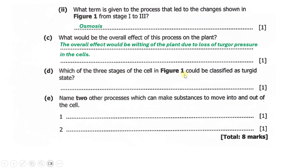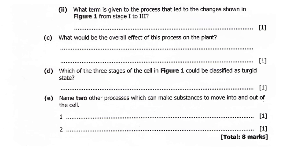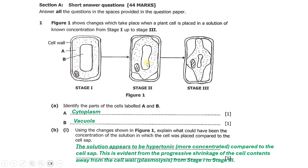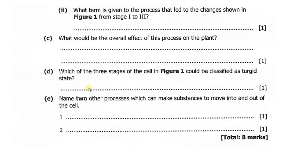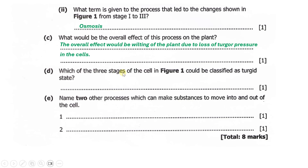Part (d) asks: which of the three stages of the cell in Figure one could be classified as the turgid state? The turgid state is a state in which the contents of the cell press against the cell wall. Looking at the stages, only stage one qualifies, as in stage one the cell contents are fully pressed against the cell wall.